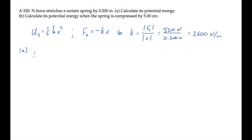Now in part A, we can substitute the value of k along with the stretch of 0.2 meters. Remembering to square that, we find the potential energy is 52 joules.